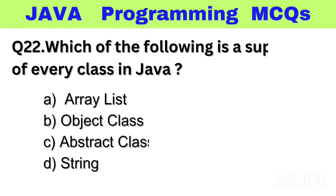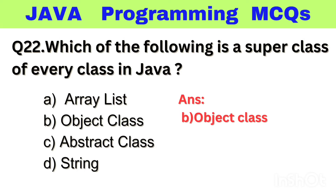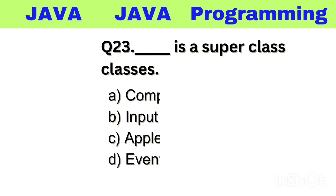Question number 22. Which of the following is a superclass of every class in Java? Option A: ArrayList, B: Object class, C: Abstract class, D: String. The right answer is option B, Object class.